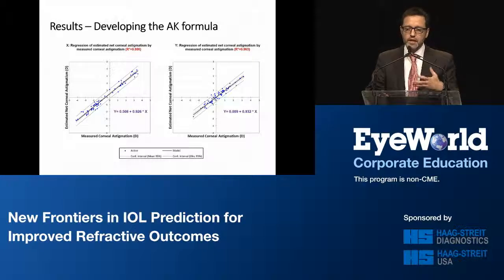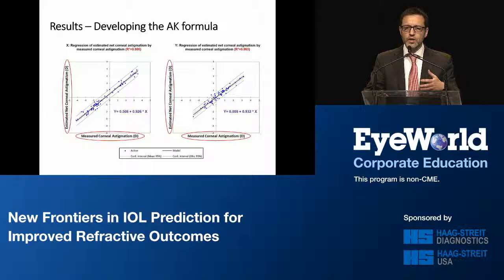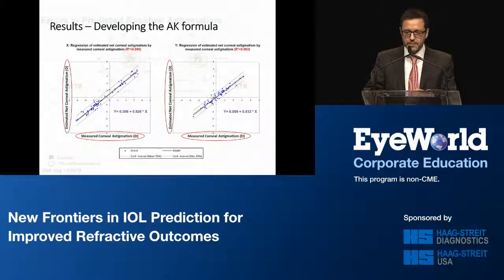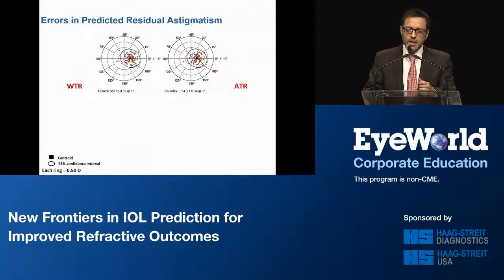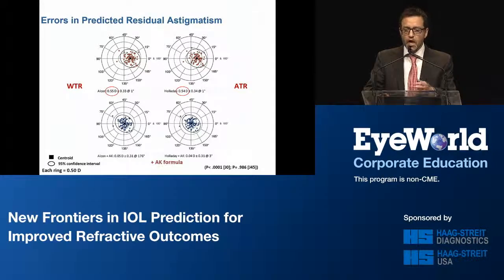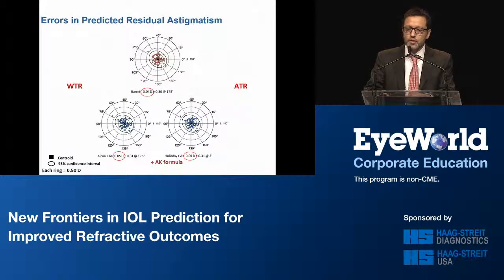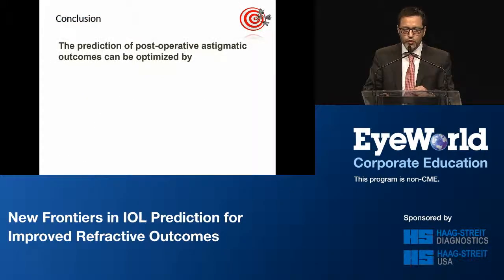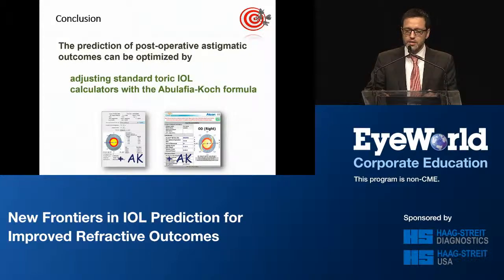We found a high correlation between the X and Y components of the measured corneal astigmatism and the estimated net corneal astigmatism. Although we tried several sophisticated models, a simple linear regression was the most accurate in our dataset. In the validation group, both the Alcon and Holladay toric calculators yielded against-the-rule errors in predicted residual astigmatism with a centroid of more than 0.5 diopters. However, these results were corrected by the regression formula, with the centroid prediction errors reduced almost to zero, and the results were similar to those of the Barrett toric calculator. Our conclusion was that prediction of postoperative astigmatic outcomes can be optimized by adjusting standard toric IOL calculators with the new formula.